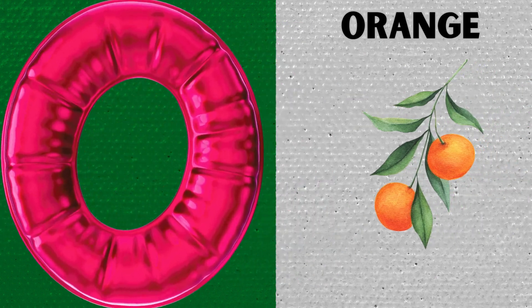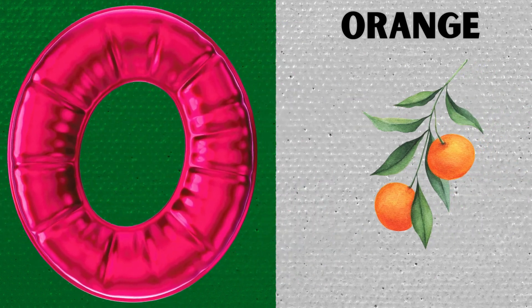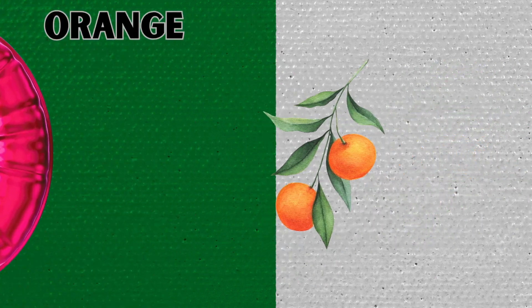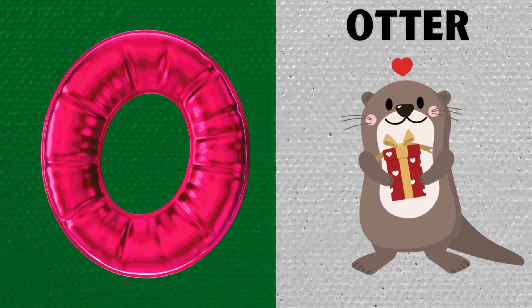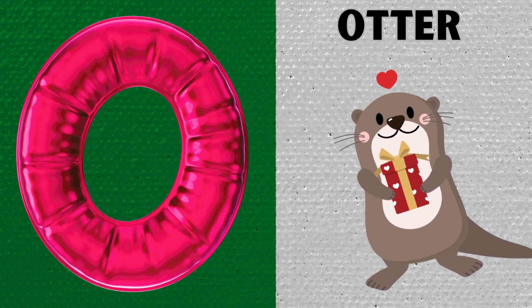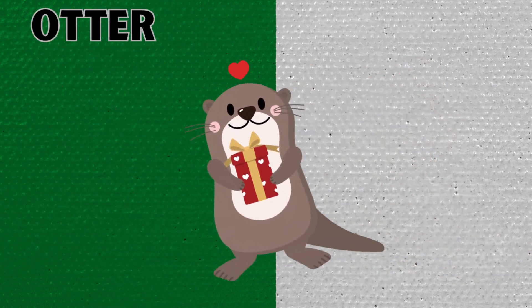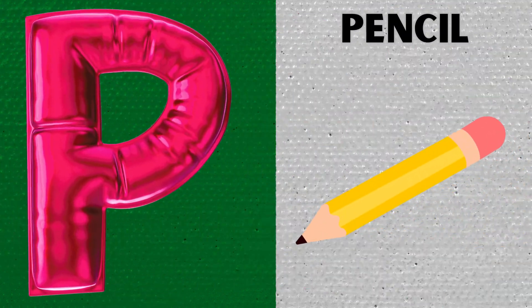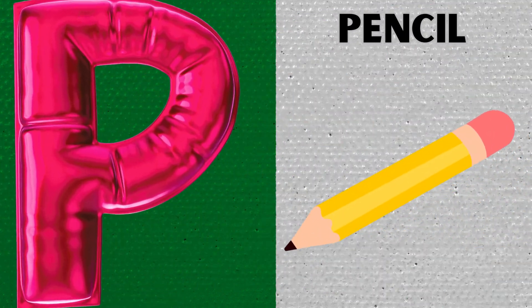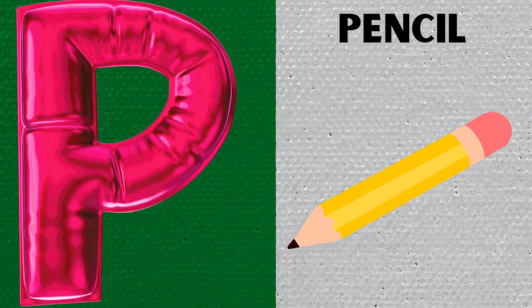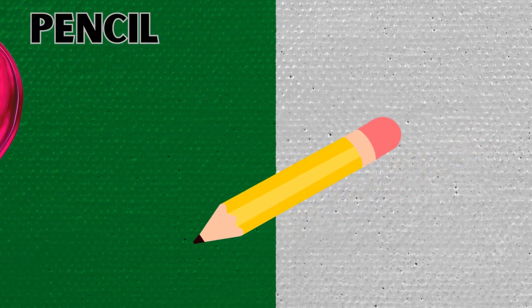O is for Orange. O, O, Orange. O is for Otter. O, O, Otter. P is for Pencil. P, P, Pencil.